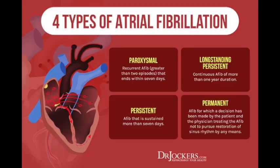Atrial fibrillation: multiple irritable atrial foci firing at very fast rates — increased risk for atrial thrombus formation and stroke. AFib is the most common chronic arrhythmia. Most patients are asymptomatic. Etiologies: cardiac disease, ischemia, pulmonary disease, infection, cardiomyopathies, electrolyte imbalances, idiopathic, thyroid disorders (thyrotoxicosis), increased age, genetics, hemodynamic stress, medications, drugs, or alcohol. Men more common than women.